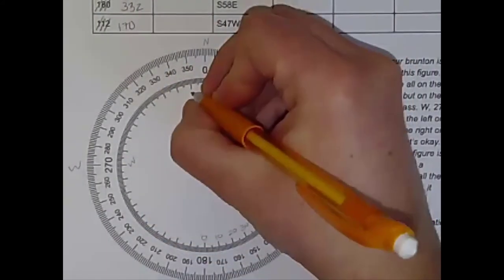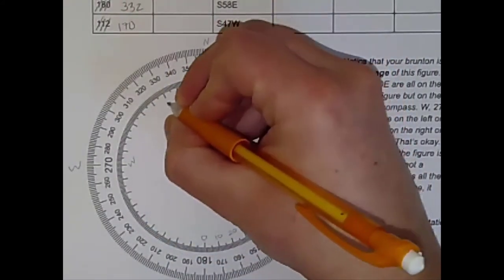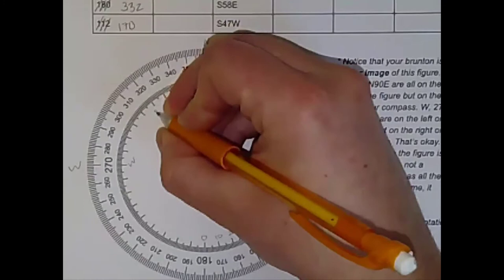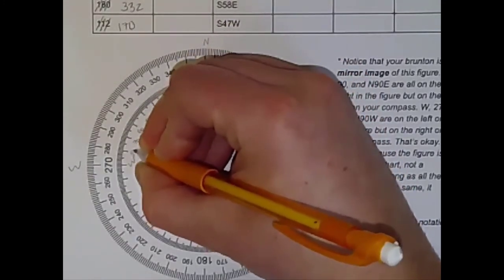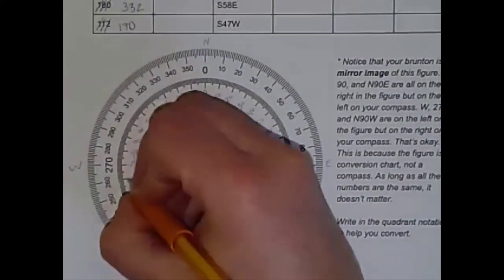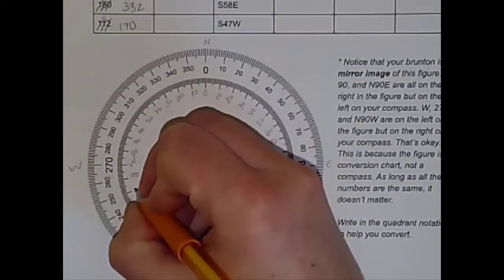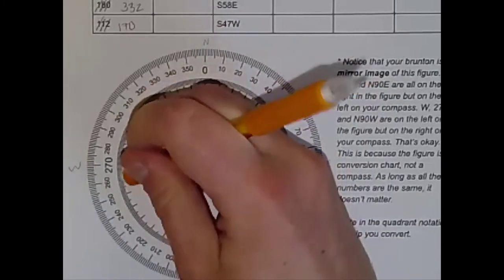And then we're going to do the same thing going toward the west. So 10, 20, 30, 40, 50, 70, 80, and 70. Nope, nope, not 70.